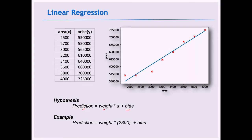Our aim is to find the best weights and biases that fit the linear line to the data with minimum error. Once trained, these weights and biases can be used to predict on new data. For example, to predict the price of a house with area 2800, we use the pre-trained model weights and biases. This is how linear regression works.